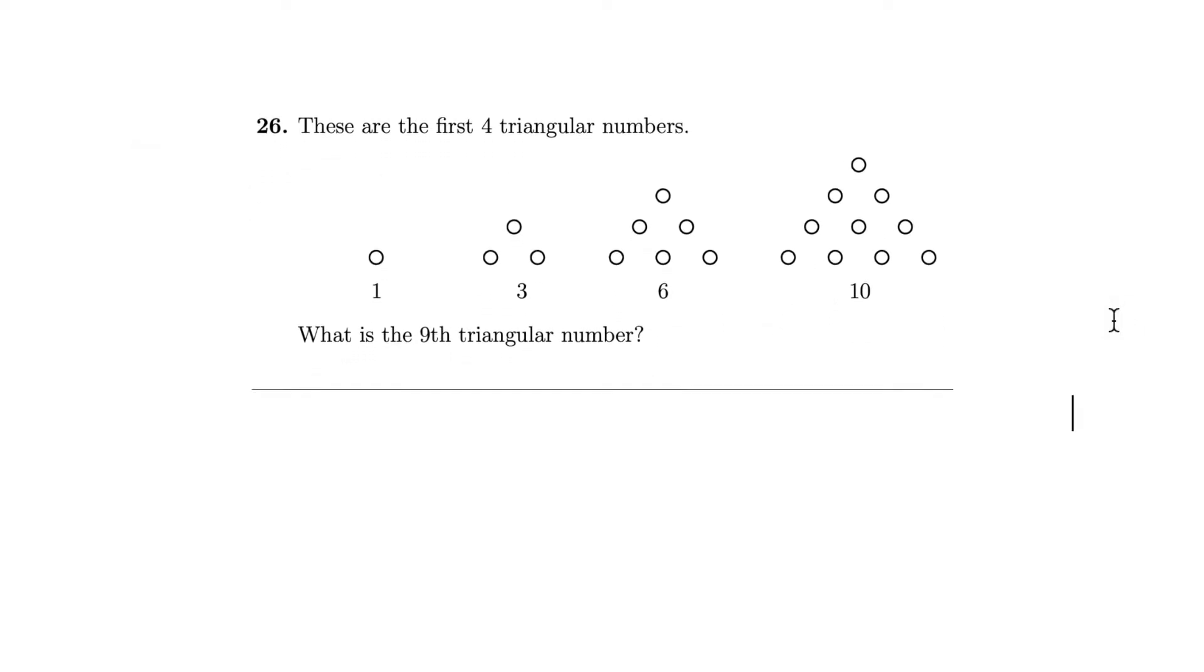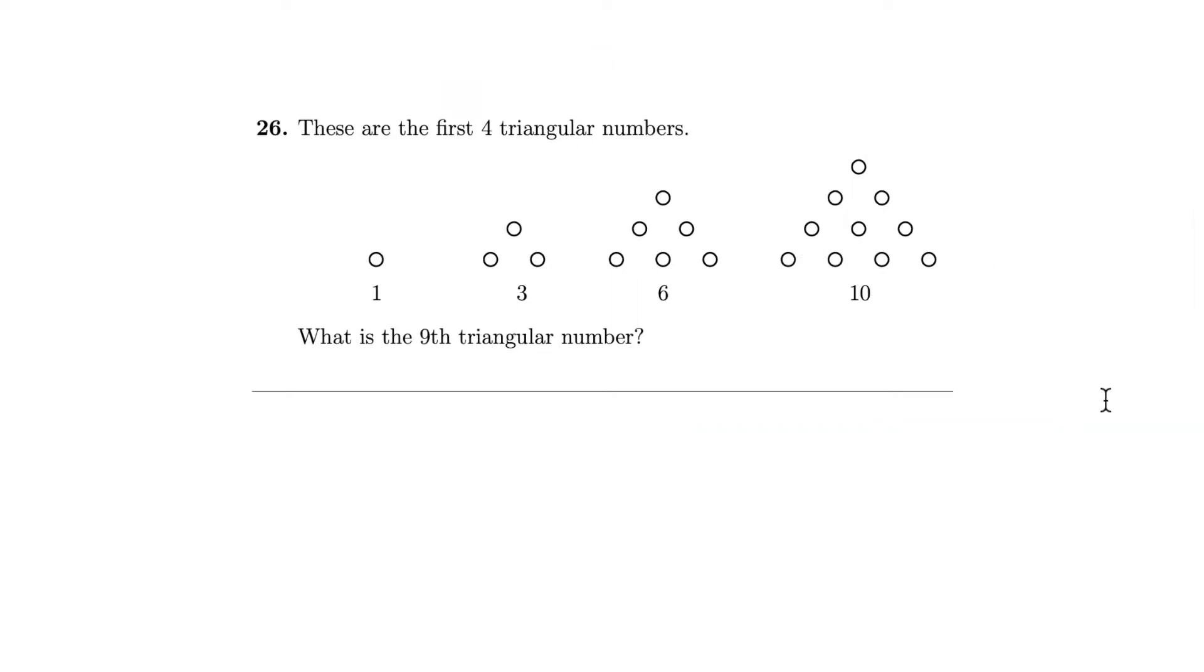So here is the first problem. These are the first four triangular numbers. What is the ninth triangular number? Here we have triangular numbers. It's basically you start with one, now you add two to get three, now you add three to get six, now you add four to get ten.